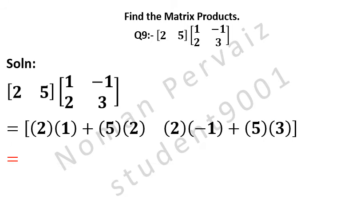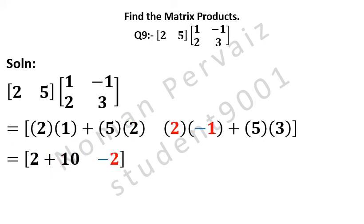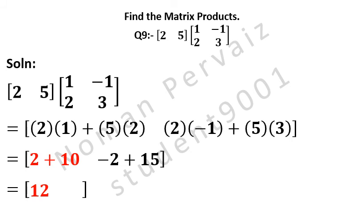Is equal to: 2 ones are 2, plus 5 twos are 10. Minus 2 ones are 2, plus 5 threes are 15. Is equal to: 2 plus 10 is 12, minus 2 plus 15 is 13.